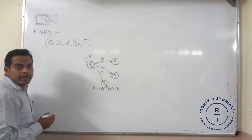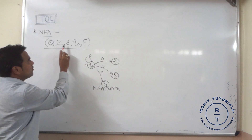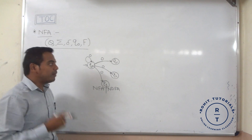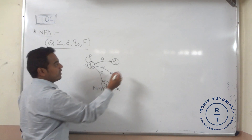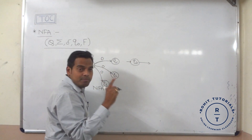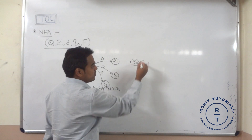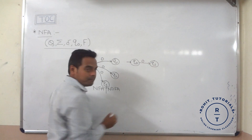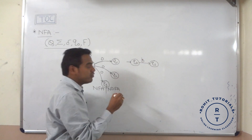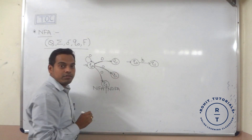Non-deterministic finite automata are represented with the help of five tuples: capital Q, summation, rho, q0, and F — same as deterministic finite automata. What happens in deterministic finite automata? If suppose initial state q0 is present, so for the given input symbol, only one transition is available from the current state. Suppose at q0 state 0 occurs, it goes to q1. Means only one transition is available for a given input symbol, whereas here multiple choices are available.